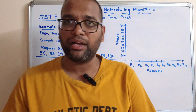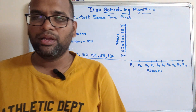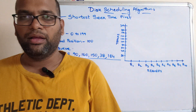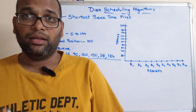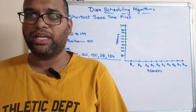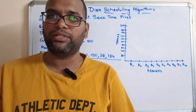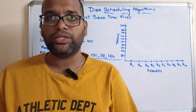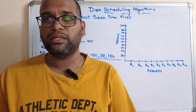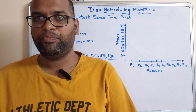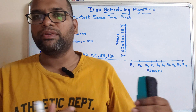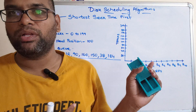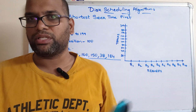In our previous session we saw the introduction to disk scheduling algorithms, the key terms to concentrate on, and one disk scheduling algorithm — FCFS, which is First Come First Serve. We saw its advantage of no starvation, and its disadvantage of more seek time to move the head from one request to another. To avoid that disadvantage, we move to the second algorithm: Shortest Seek Time First.